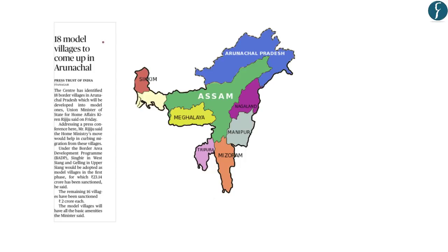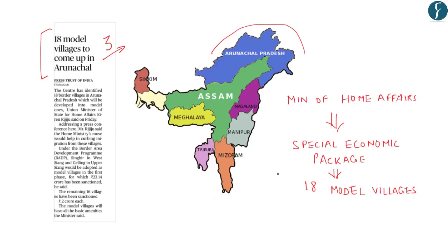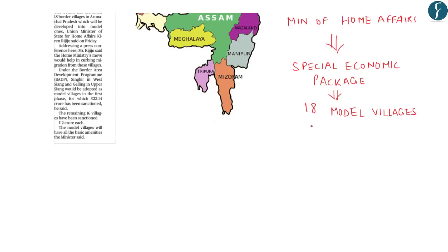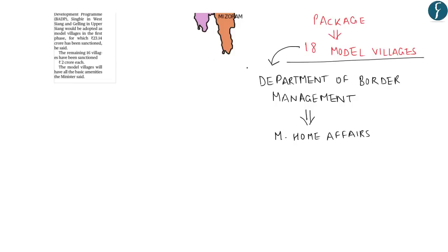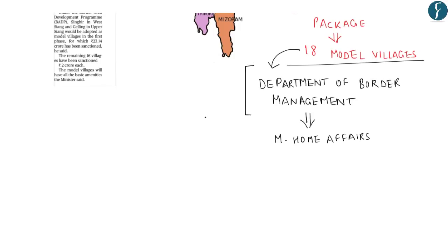The next news appears on page number 3. The news reads: '18 Model Villages to Come Up in Arunachal Pradesh.' The Union Ministry of Home Affairs has sanctioned a special package to create 18 model villages in Arunachal Pradesh along the China border. These villages have been selected by the Department of Border Management, which comes under the administrative control of the Ministry of Home Affairs. A prelims question can be asked on which ministry the Department of Border Management falls under — the correct answer is Ministry of Home Affairs.